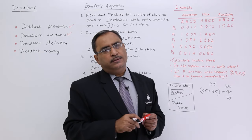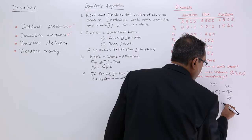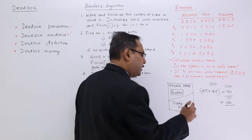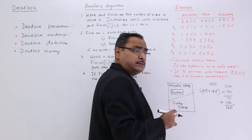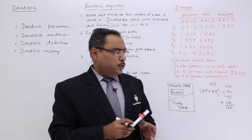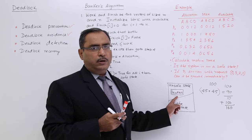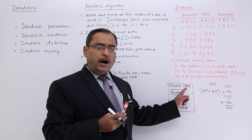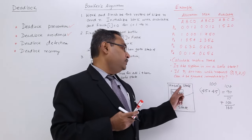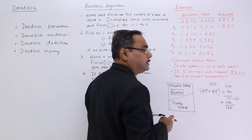The deadlock situation will take place. But it might also happen that another person comes and deposits 150 bucks to their account. So the bank is now having 160 bucks and again comes back to the safe state. So it is not always true that unsafe state means deadlock is going to occur. It may also have a transition from the unsafe state to the safe state.